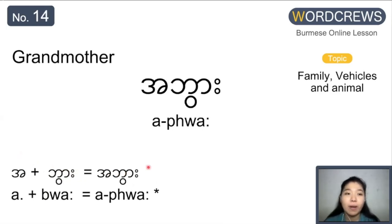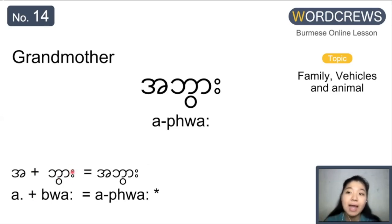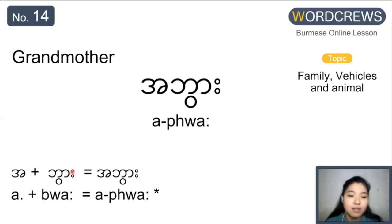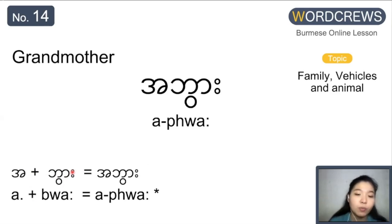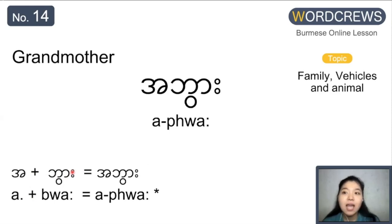Next one is grandmother. Grandmother is also a po, similarly like grandfather. Here it's spelled with ba alphabet and a wa consonant symbol, so it is actually a bo. But we don't pronounce it like that — we pronounce a po. So it is spelled a bo but we pronounce a po.